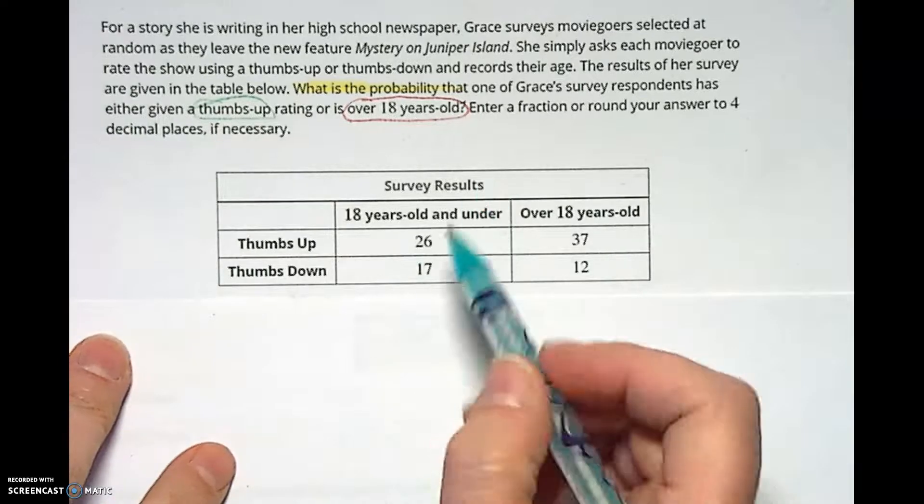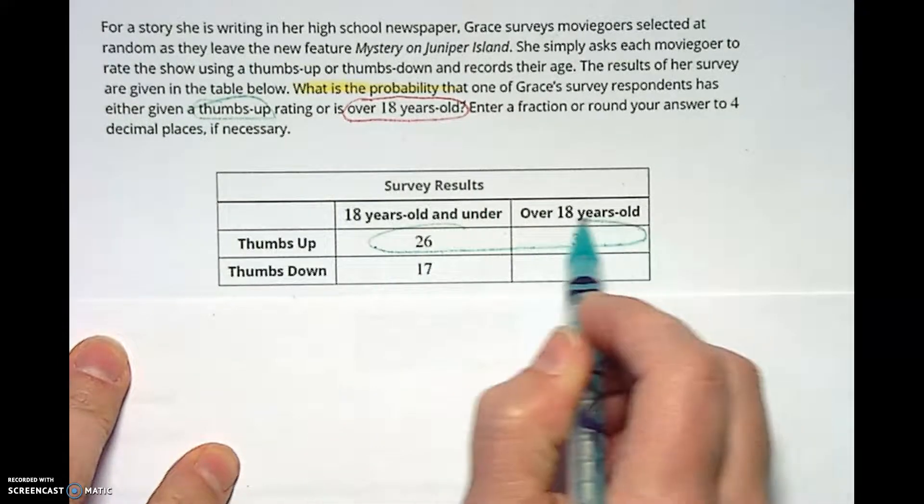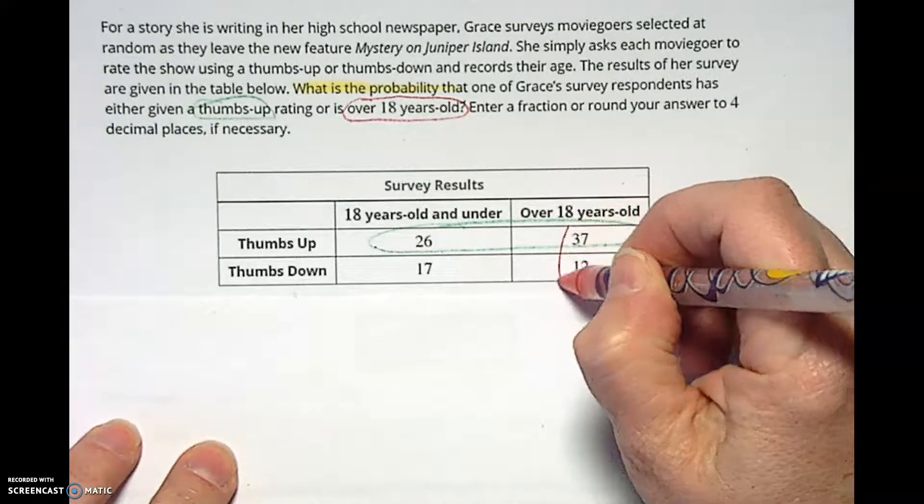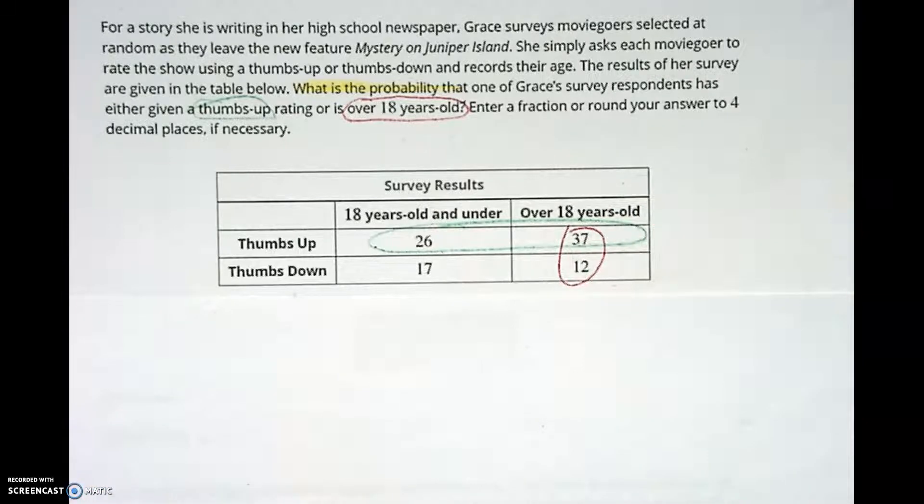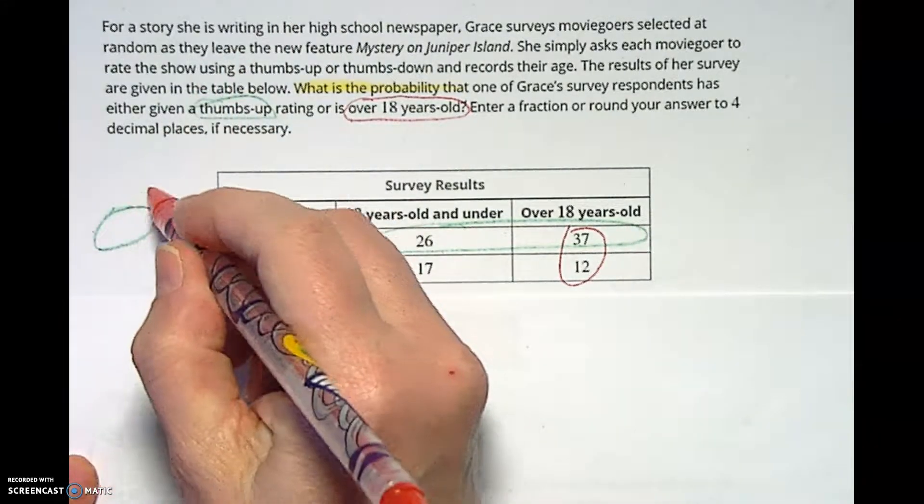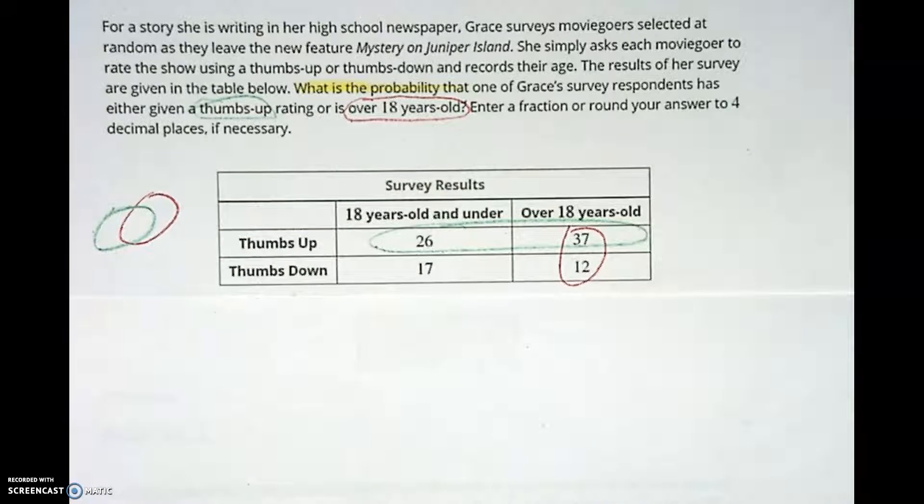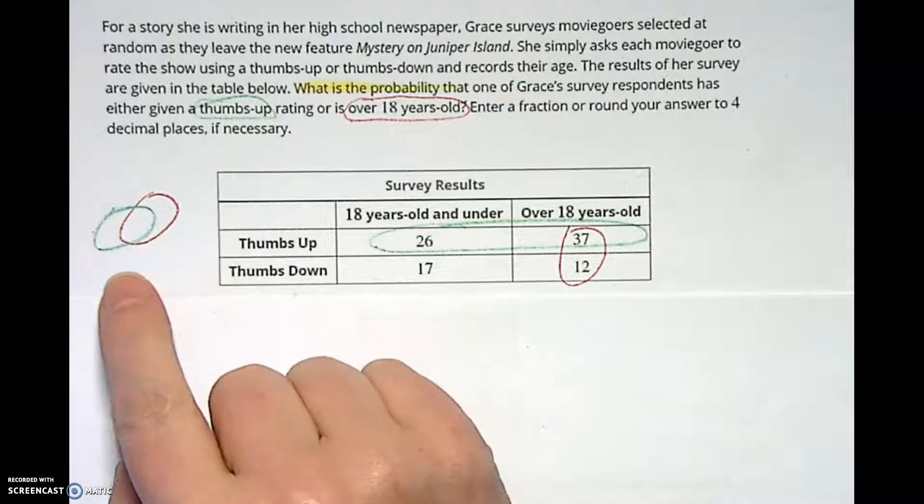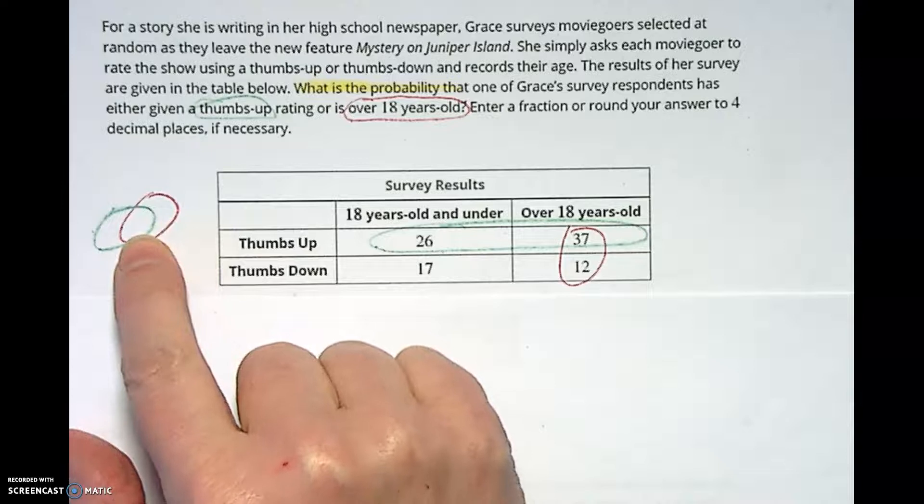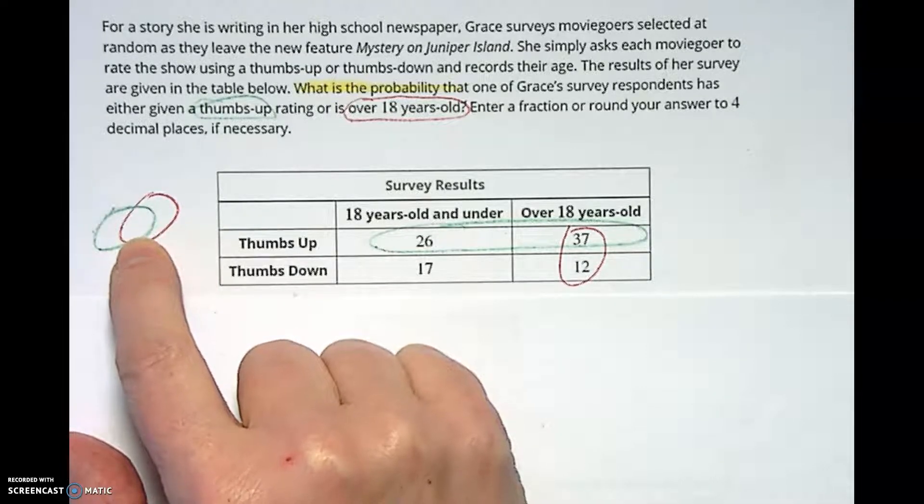So we've got the thing we need: thumbs up or 18 years old. Here's the little table of results they gave us. Here's our thumbs up right here, all these people, or over 18 years old, these people. Several things going on here and I kind of want you to see the connection to Venn diagrams with this. Since there's an 'or' there, I made these two little circles. In Venn diagram land we would have done this. And 'or' - do you remember what 'or' means? Or means either green or red or both. But the special thing about this 'both' is you don't double count it.